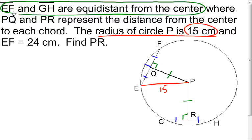And I also know the length of segment EF is 24 centimeters. Well, if segment EF is 24, then this part right here is going to have to be 12. And now I see that I have a right triangle there, and I can use the Pythagorean theorem to find the length of segment PQ. Well, once I find the length of segment PQ, I know that that's going to be equal in length to the length of segment PR because they're congruent, as I have marked in my picture.